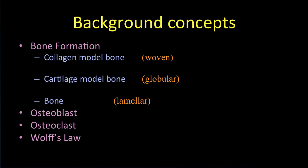Once bone has been deposited and exists as a structure, it is remodeled through a third type of bone formation, which is termed lamellar. This type of bone is stronger, as it is applied in opposed layers of collagen. These layers are like plywood, in that there is a predominant direction of the grain that is at an angle to the adjacent layer, which reinforces the structure remarkably. In lamellar bone formation, the pre-existing bone acts as the template. The rest of this short video will review these three types of bone formation.